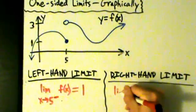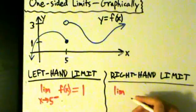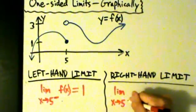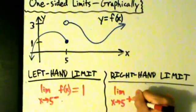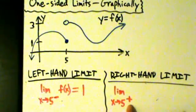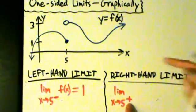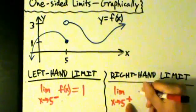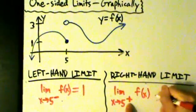The notation for that is lim for limit, and then underneath that, x approaches 5. And now we have a plus sign in the superscript on the 5. So the plus sign indicates the positive direction, which means from the right. Plus sign here, positive direction. We're coming in from the positive direction, which means we're coming in from the right. Then f(x) equals...